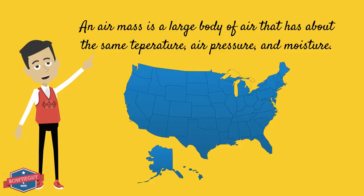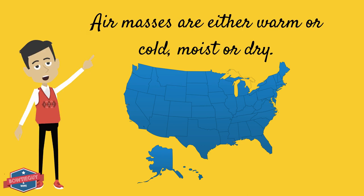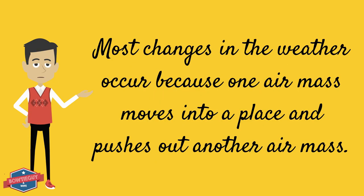An air mass is a large body of air that has about the same temperature, air pressure, and moisture. Two conditions are used to describe air masses: temperature and humidity. Air masses are either warm or cold, moist or dry. Most changes in weather happen when one air mass moves into a place and pushes out another air mass.